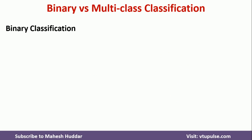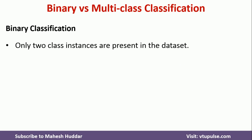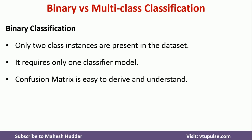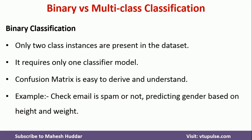Let us discuss a few points related to binary classification. When it comes to binary classification, only two class instances are present in the dataset. It requires only one classifier model — we don't need multiple classifiers. A confusion matrix is more than enough to understand the results. Examples of binary classification include checking whether a given email is spam or not, and predicting the gender of a person based on height and weight. In these examples, we have only two classes: spam or not spam, and male or female.